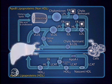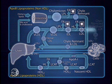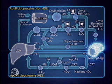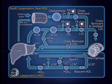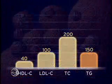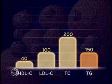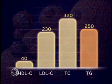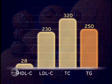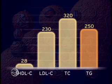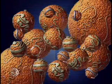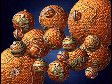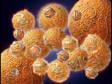Disruption of one or more components of this system can tip the balance, creating dyslipoproteinemias that promote accumulation of cholesterol in the arterial wall. These dyslipoproteinemias are characterized by abnormally high or low plasma lipid levels. While lipid profile measurements serve as the primary basis for determining treatment, they fail to reveal the intricacies of atherogenic risk associated with specific lipoprotein particle populations.